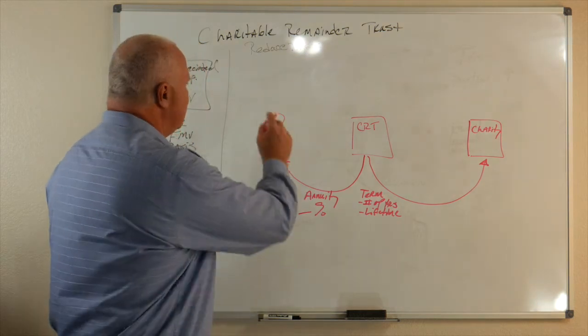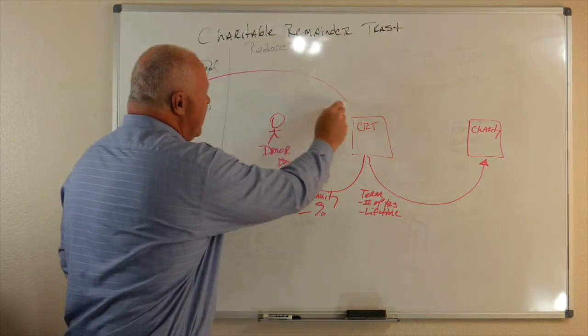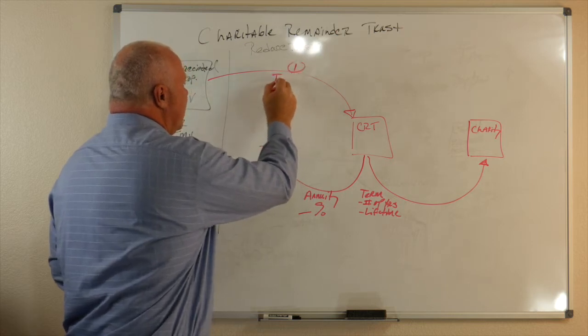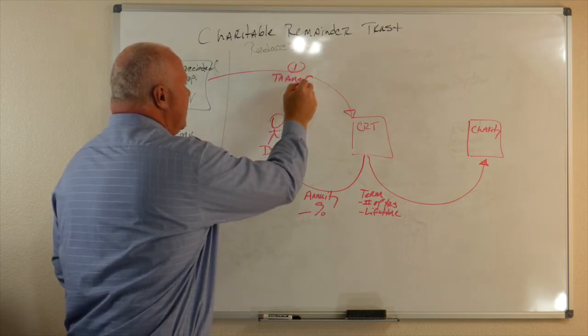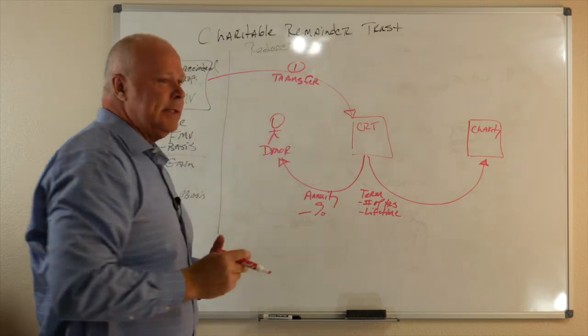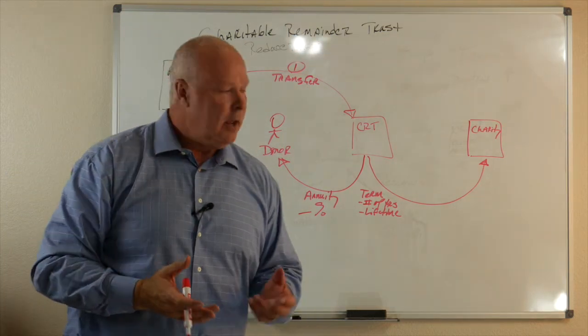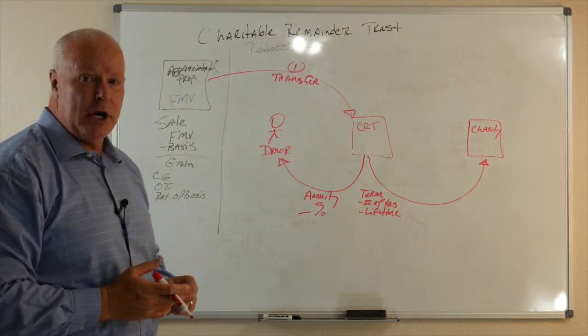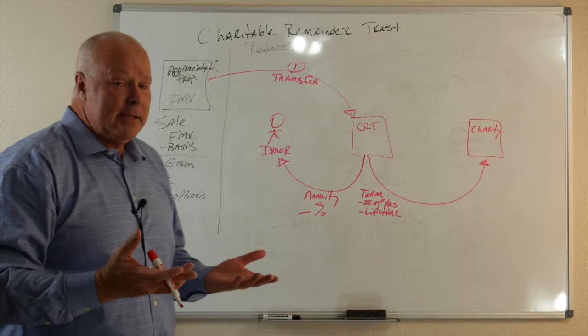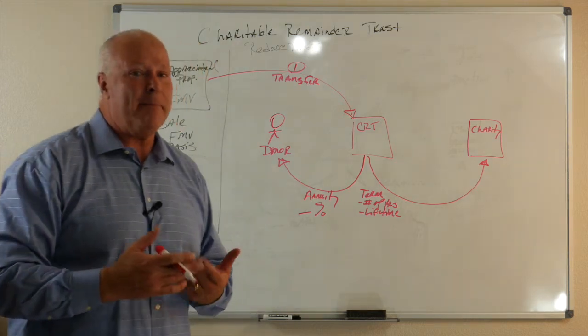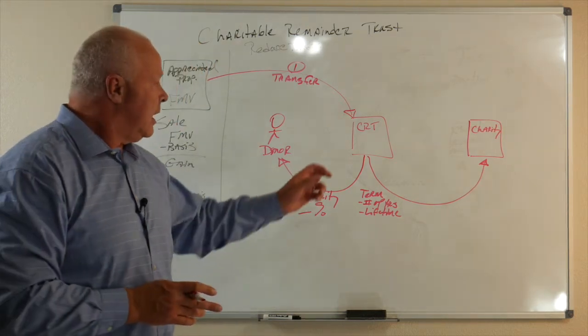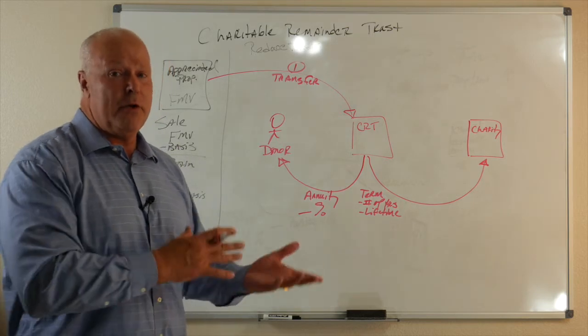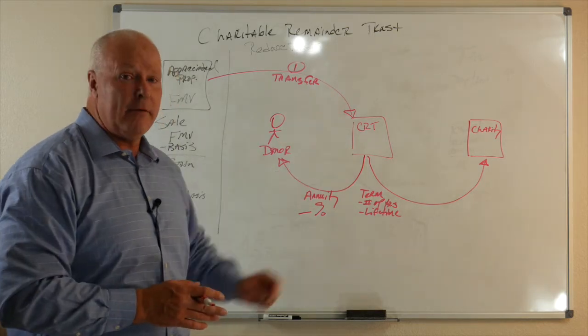So what happens now? Let's take that appreciated property. Step one, transfer it in. And this is key. Before our client signs any sales agreement, they need to make sure this asset is transferred into the charitable remainder trust. If, and I've had this happen, clients have called me up after the fact and said, can we still do that charitable remainder trust? The answer is no. There's other planning we can do, but this one's off the table.